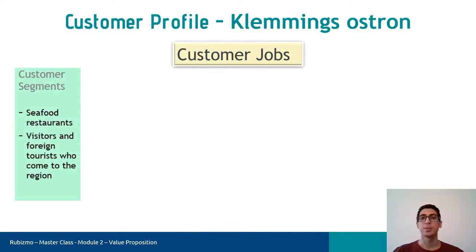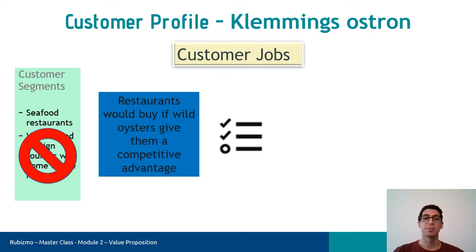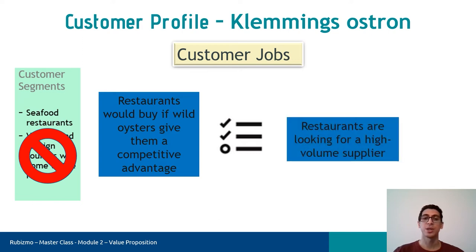Now we can look at our case. And here, let me note that we have to make value proposition canvas for every customer segment. Therefore, we only work on restaurants and what tasks they try to perform. In this case, for example, restaurants would buy if wild oysters give them a competitive advantage. And in addition, restaurants are looking for a high volume supplier.